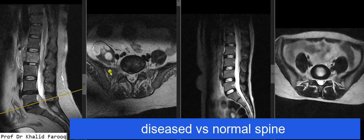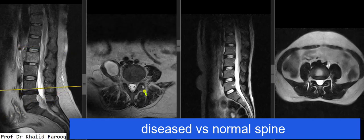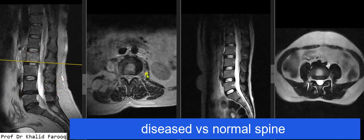Here we can see multiple variable-sized collections or abscesses in the right psoas muscle, which is swollen, while the left psoas muscle shows normal signals and morphology. In this patient, there are abnormal signals in both psoas muscles and in the right quadratus lumborum, suggesting an inflammatory process with tiny collections in the left psoas muscle.